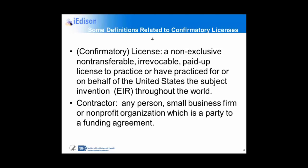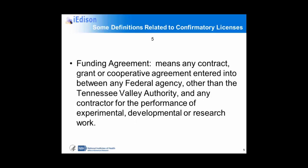As far as a few definitions: the confirmatory license refers to the document itself. It's a non-exclusive, non-transferable, paid-up license, so the United States government could never be accused of infringing on your patent, and we may use it anywhere in the world. Contractor means any person, small business firm, or nonprofit — including all universities — which is a party to a funding agreement for performing the work under the specific aims of the grant. The funding agreement means not just the grant itself, but also contracts or cooperative agreements entered into between any federal agency, other than the TVA, and any contractor for the performance of experimental, developmental, or research work.